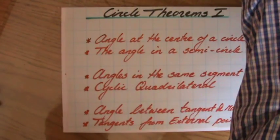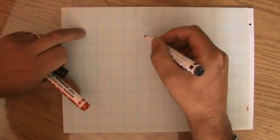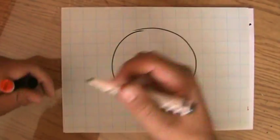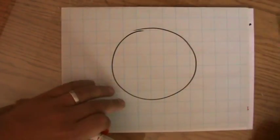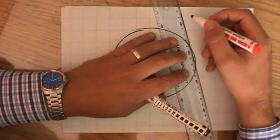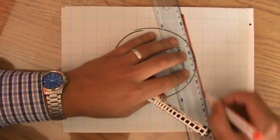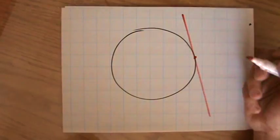And a tangent is, if I quickly sketch that, is a touchline at the circumference of a circle. So if I have a circle, then this is a tangent. It's just touching the circumference. Oh well, that's not really a tangent, but almost a tangent.